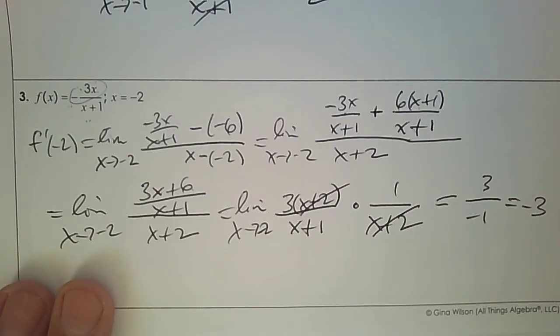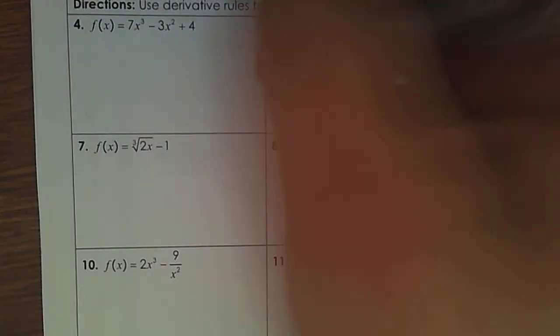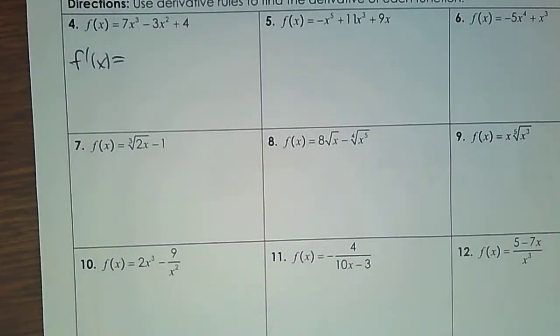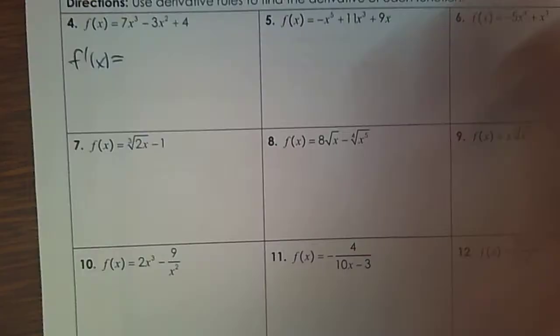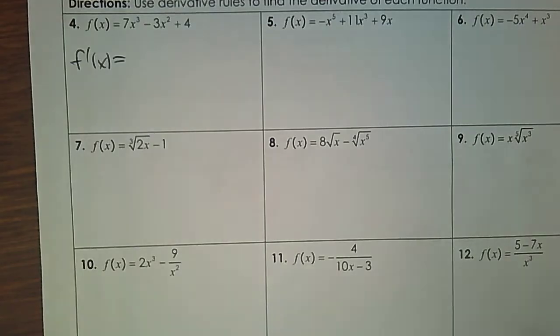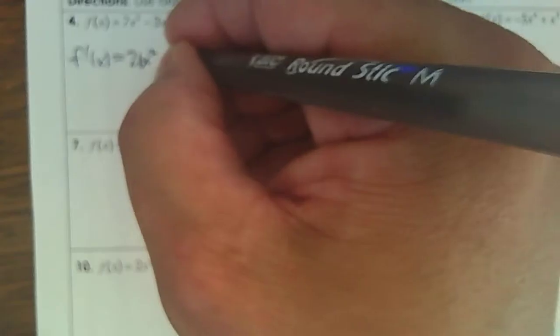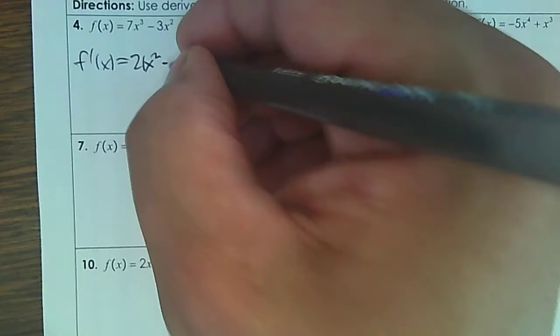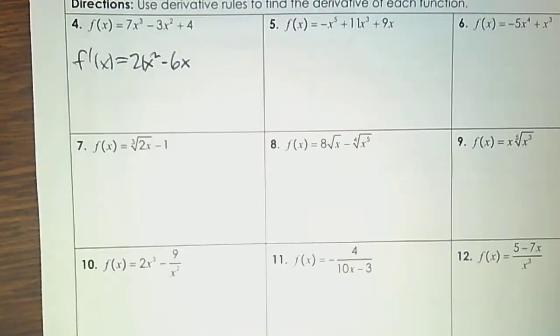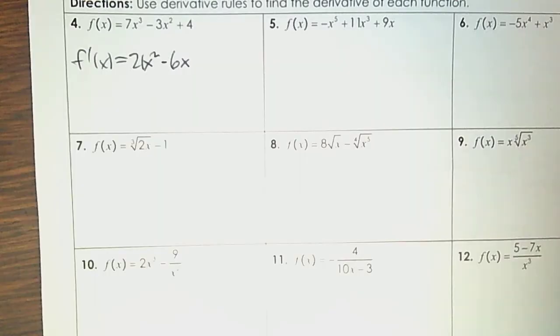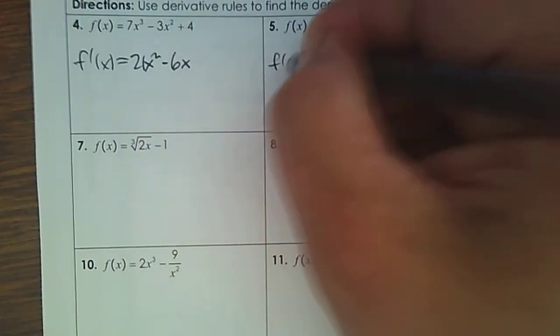All right, enough with limits. Now practice using some rules. So first the power rule. Number 4: can you do the power rule? Press pause — maybe you want to practice this, or you can practice it with me. 3 times 7 is 21x squared. 2 times negative 3 is 6x. And the derivative of 4 is 0. Done.